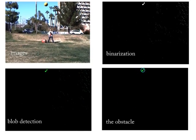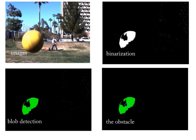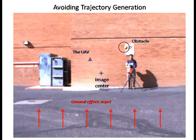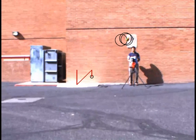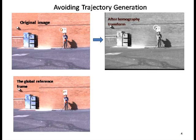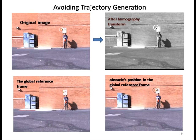Once an obstacle is detected, we employ a potential field approach to begin avoidance. This consists of calculating the position of the obstacle in a global frame of reference, which is determined by the image in which the obstacle was first detected. This is performed via homography transform.